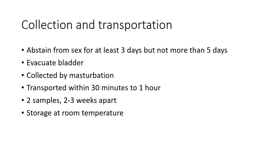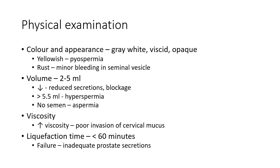The specimen should be evaluated within one hour and should not be refrigerated; it should be stored at room temperature, 20–30°C. On physical examination, normal semen is gray-white, viscid, and opaque. It can be yellowish in biospermia or rust/blood-tinged in minor bleeding in the seminal vesicle. The normal volume is about 2–5 ml per ejaculation. Decreased volume is seen in reduced secretions from seminal vesicles or prostatic glands, blockage of the ejaculatory duct, or retrograde ejaculation.